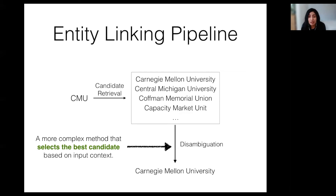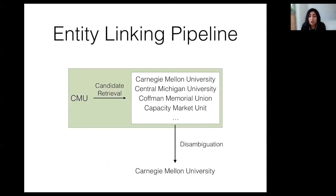The candidate retrieval step is thus necessary to reduce the search space for the disambiguation model. A candidate retrieval method with high recall is essential for good performance because if the list doesn't contain the correct entity link, then it cannot be recovered in the second step. In this talk, we will primarily focus on developing a model to improve candidate recall for low-resource settings.